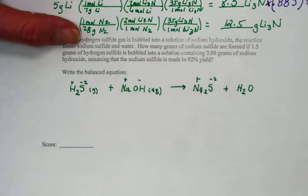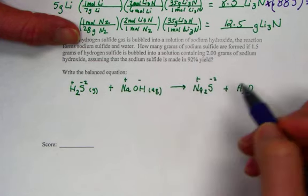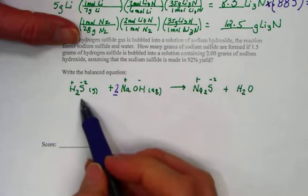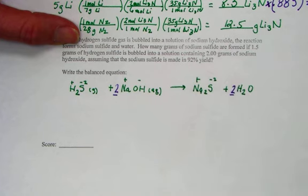We'll take a moment to balance. We've got two sodiums on the right, so I'll know I need to double the left. Two H's and two OH's on the left makes me double the waters. A 1 to 2 to 1 to 2 ratio.